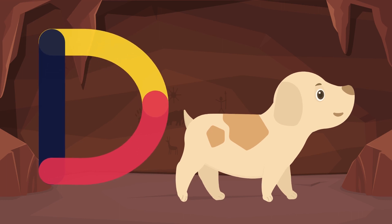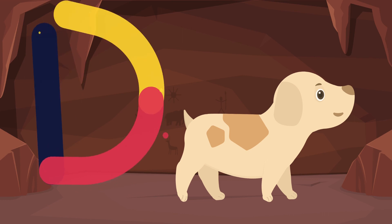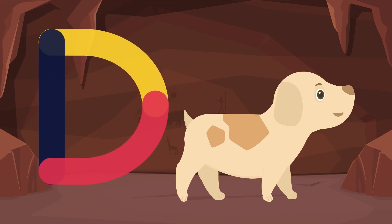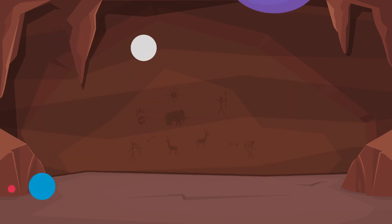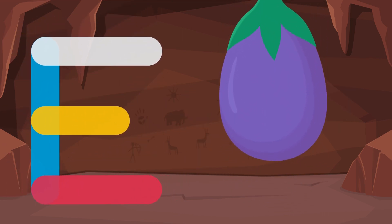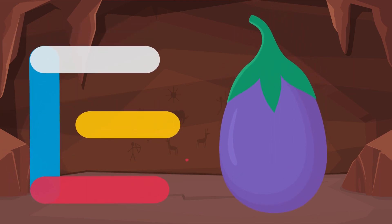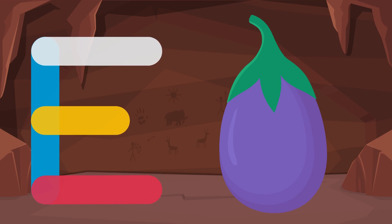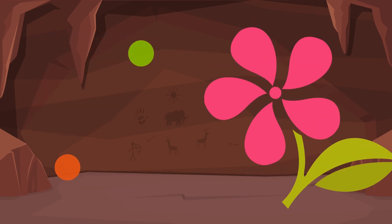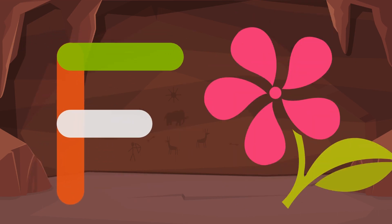D is for dog. E is for eggplant. F is for flower.